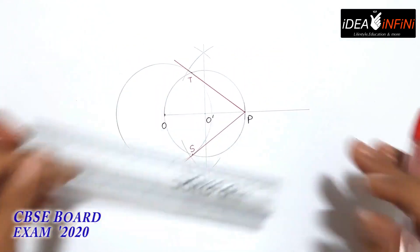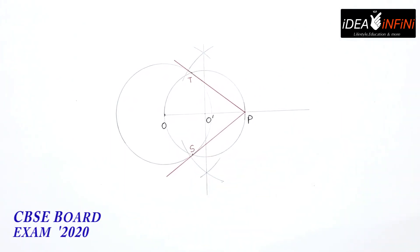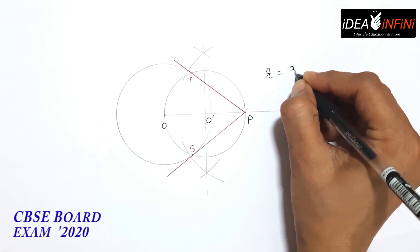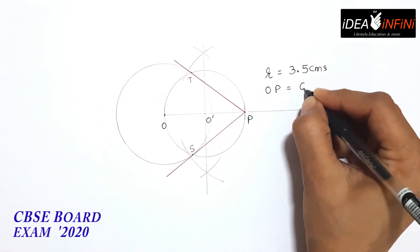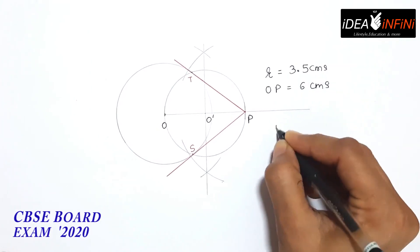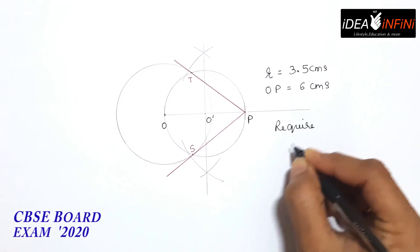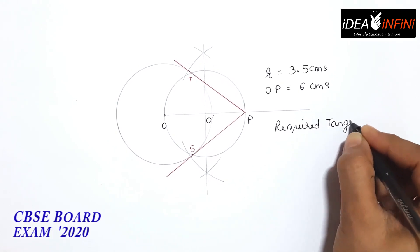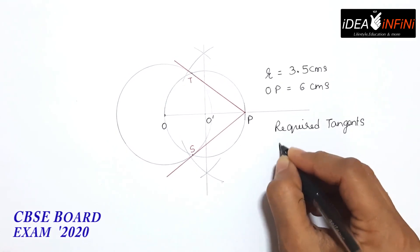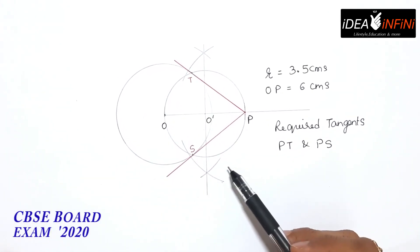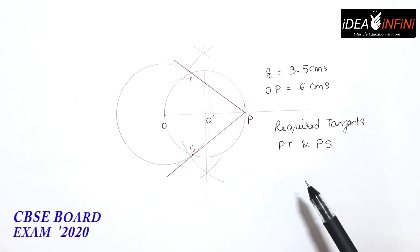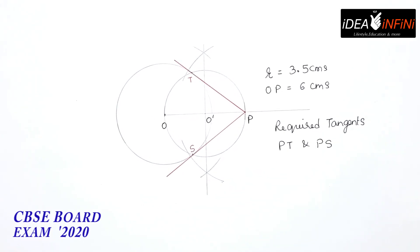P से S को join करना है और extend भी कर सकते हैं — यह आपका एक tangent PS तैयार है। दूसरा tangent PT है। Circle का radius 3.5 cm है, OP = 6 cm, और required tangents PT and PS हैं। यह construction बहुत simple है और इसमें आपके full marks बहुत easily आ सकते हैं।